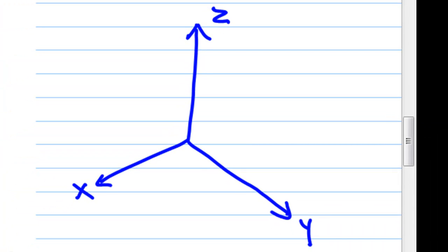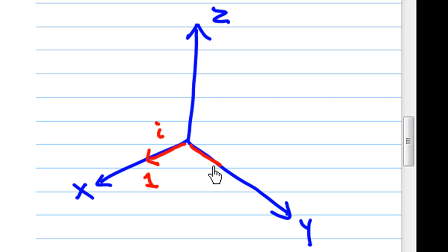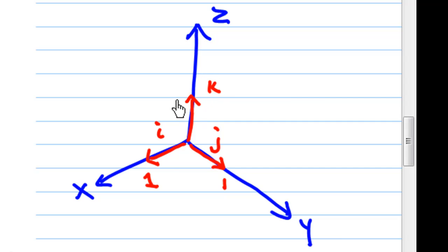Then i is a unit vector parallel to the x-axis, which means i is this vector — the length is 1. j is the vector parallel to the y-axis of length 1, which is a unit vector j. And k is a unit vector parallel to the z-axis of length 1.